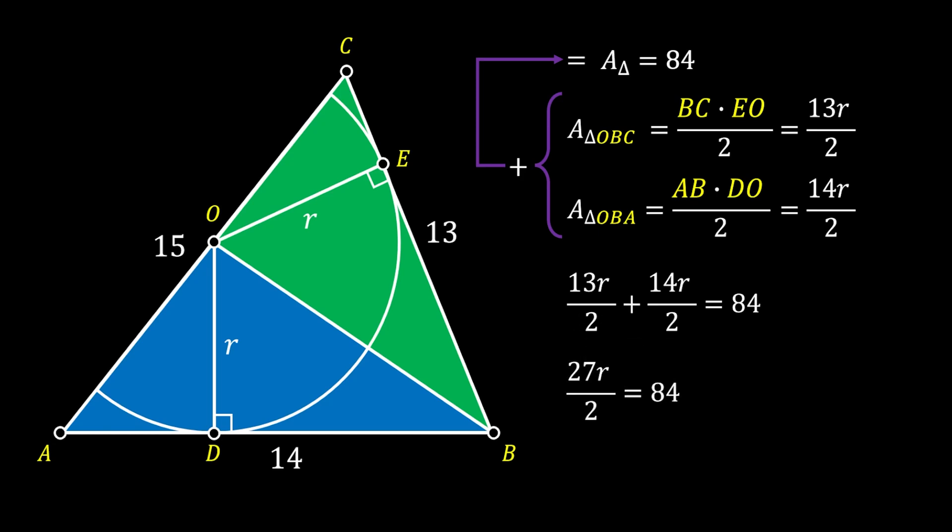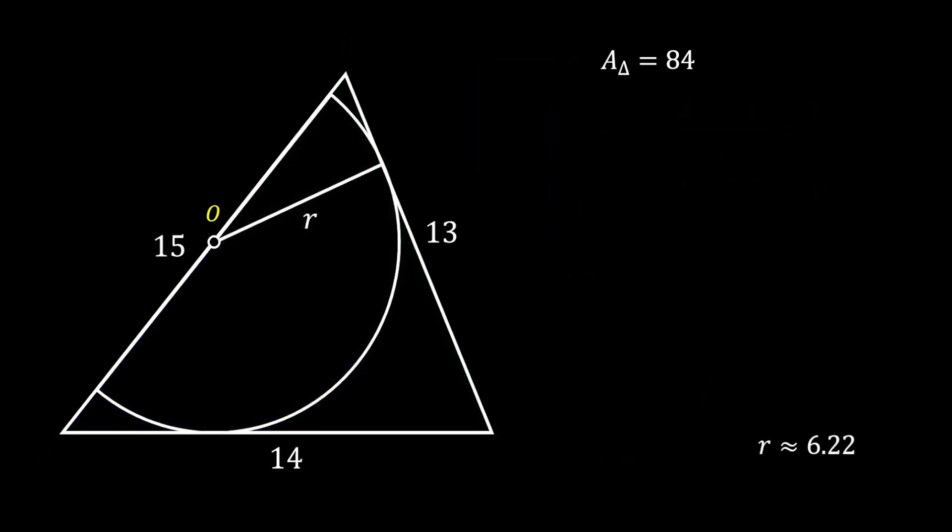Now, we can simplify this and simplify more by multiplying with two and we will get that 27R is equal to 168, which means that the radius of our half circle is approximately equal to 6.22.